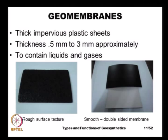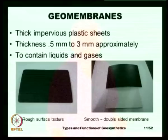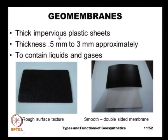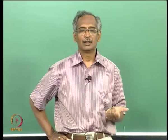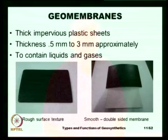Another geosynthetic product is a geomembrane, which is very commonly used for construction of landfills, canal lining, or lining other water-retaining structures. Geomembranes are nothing but thick impervious plastic sheets. Their thickness can vary from about 0.5 millimeters to almost 3 millimeters, and they are used to contain liquids or gases.